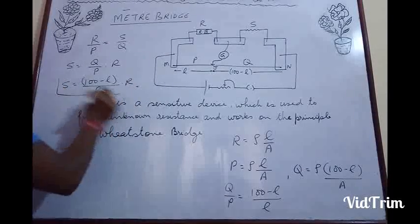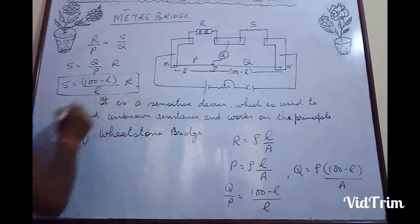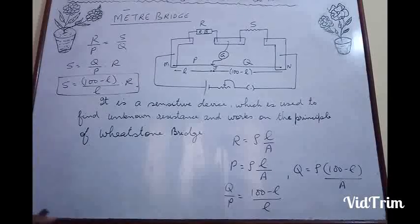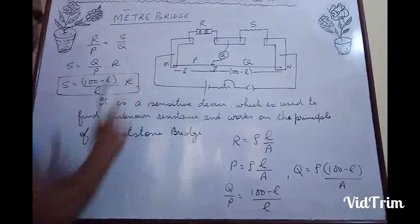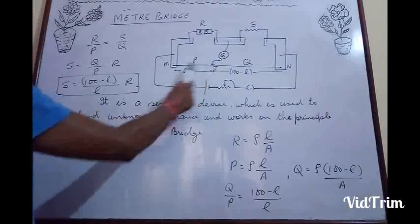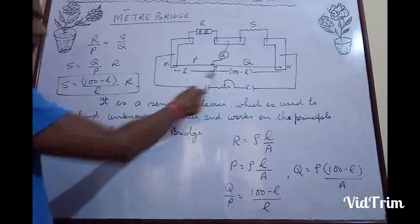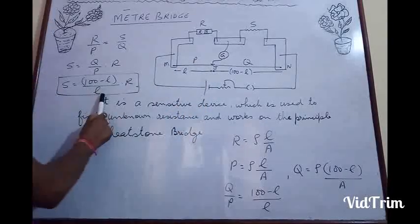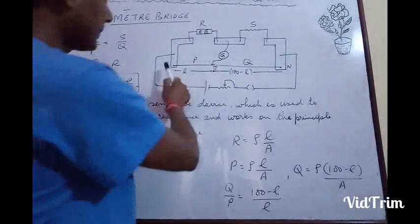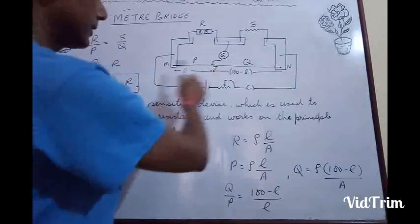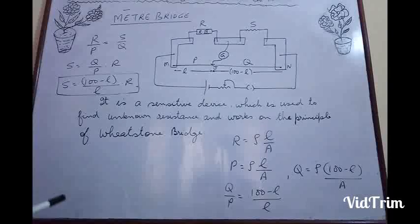In this method, we find the unknown resistance S. R is the known resistance taken out from the resistance box. With the help of the jockey, we just need to find the null point, which we can read from the meter scale. So S is the unknown resistance. This is your meter bridge.